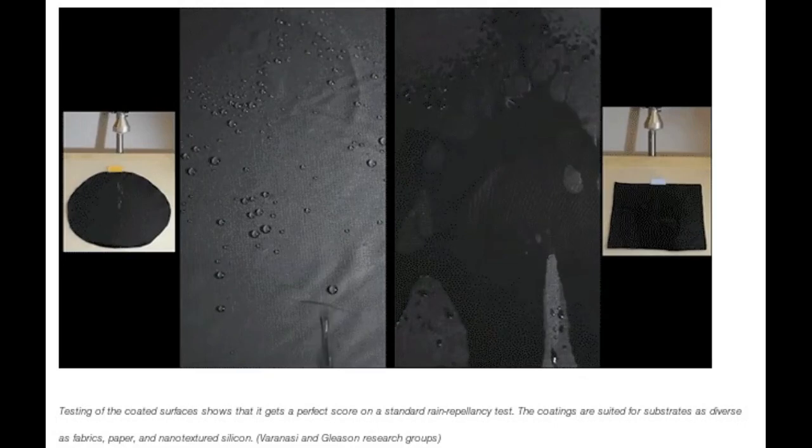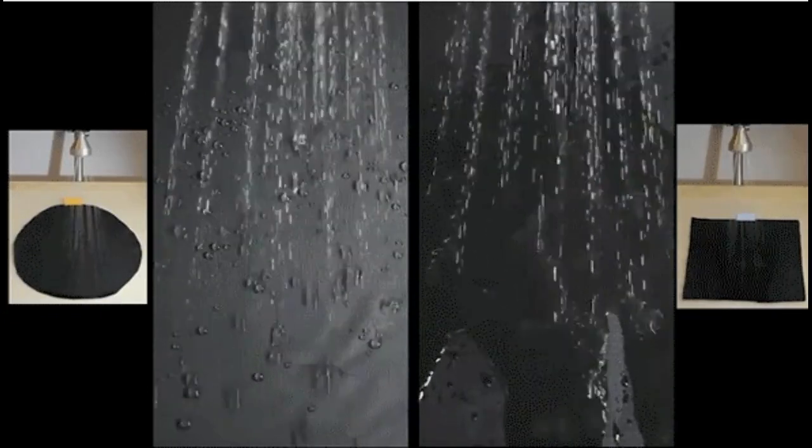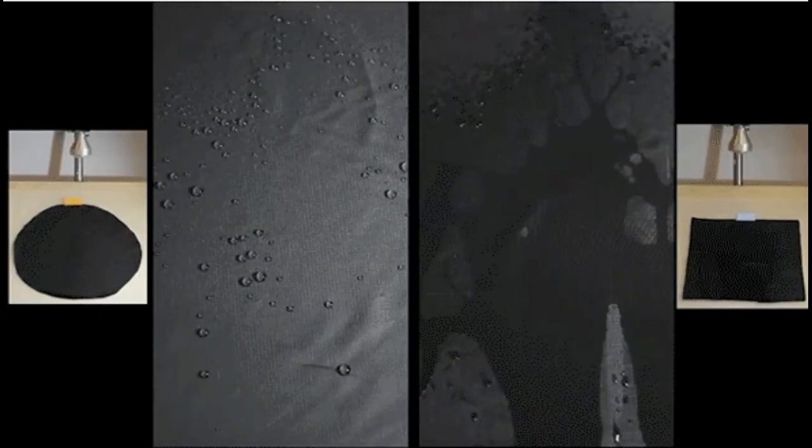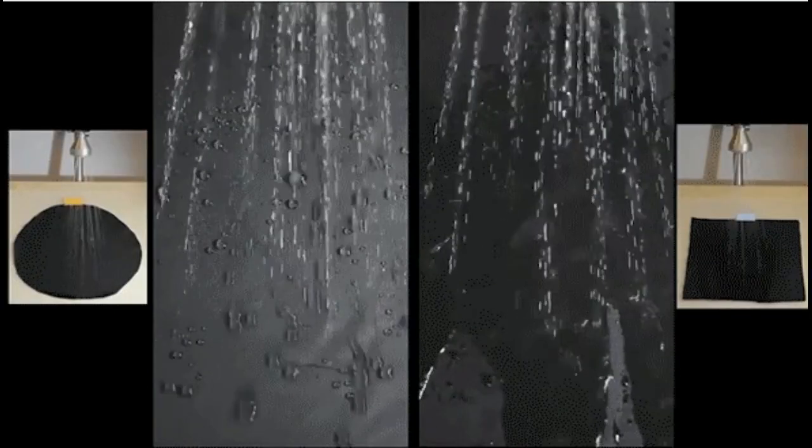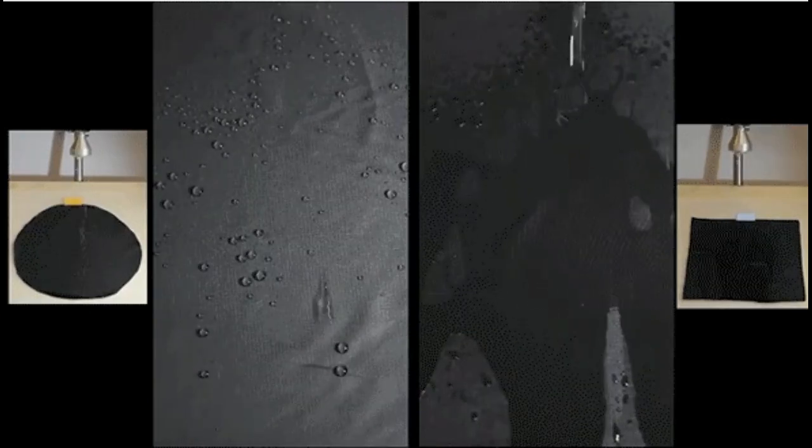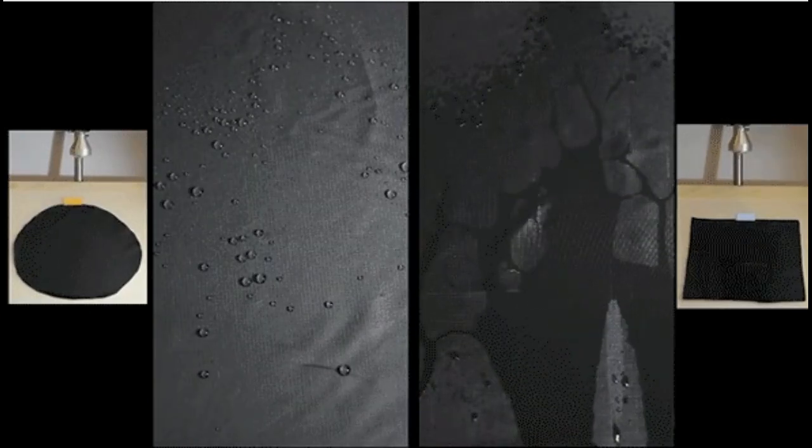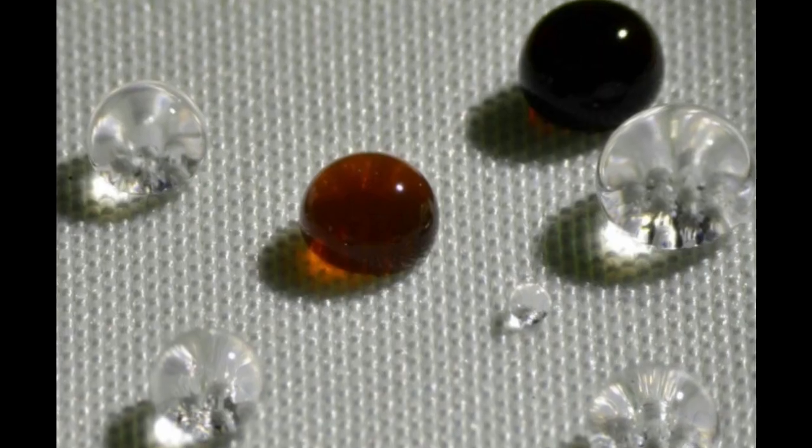And a different coating process called Initiated Chemical Vapor Deposition. Using the ICVD coating process, which does not involve any liquids and can be done at lower temperature, produces a very thin, uniform coating that follows the contours of the fibers and does not lead to any clogging of the pores.